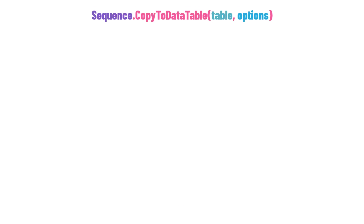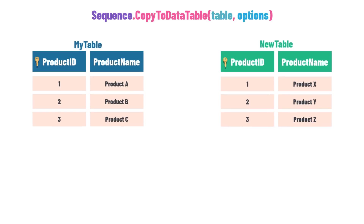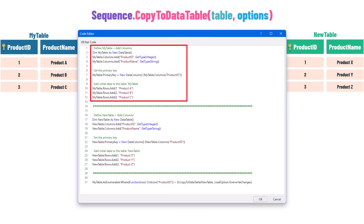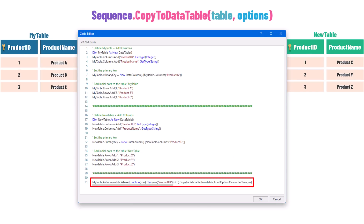Let's go back to the second overload of CopyToDataTable and check an example. Suppose I have two tables: MyTable and NewTable, both with the same column headers, where ProductID is the primary key in both. I want to filter the first table to get only rows where the ID is smaller than 3, and add the result rows to the second table. In the code, I filter the first table with a LINQ query, then use the second overload of CopyToDataTable to copy the result to the second table using the OverwriteChanges option.